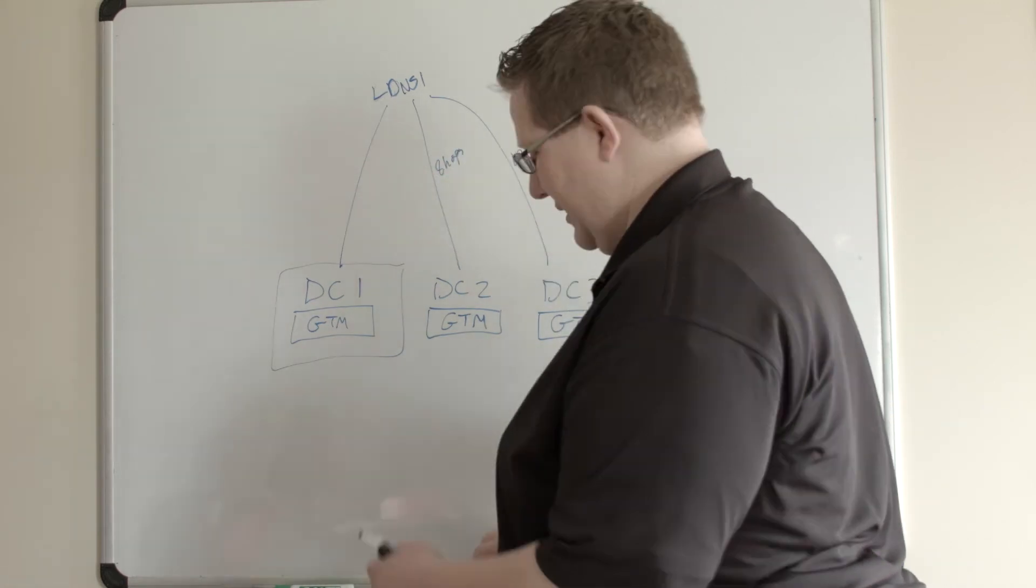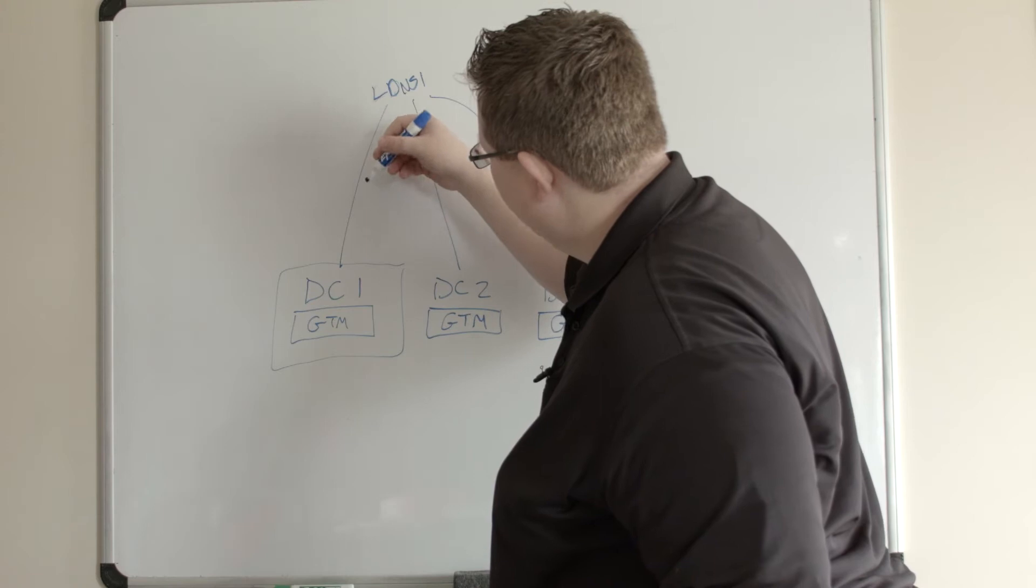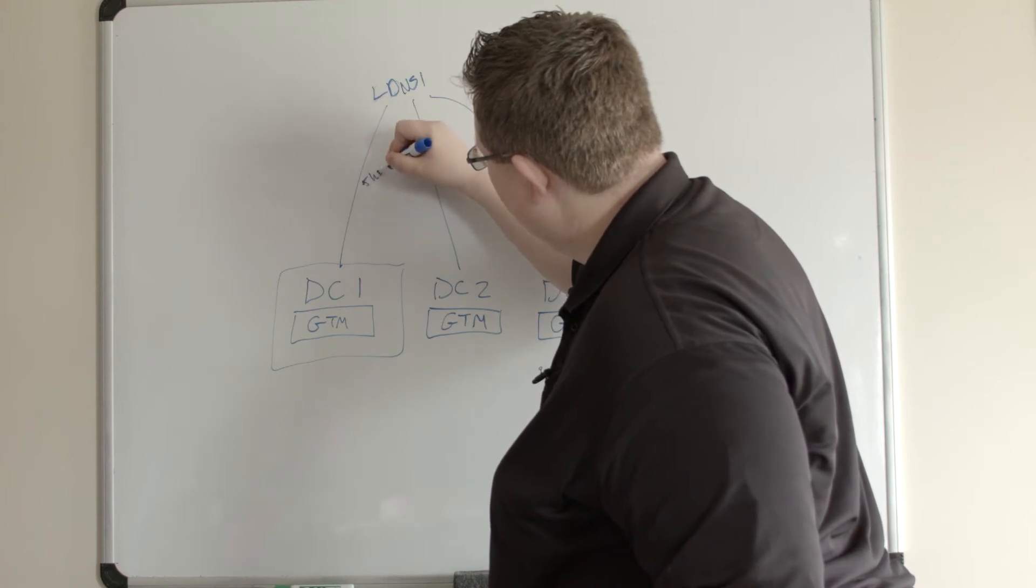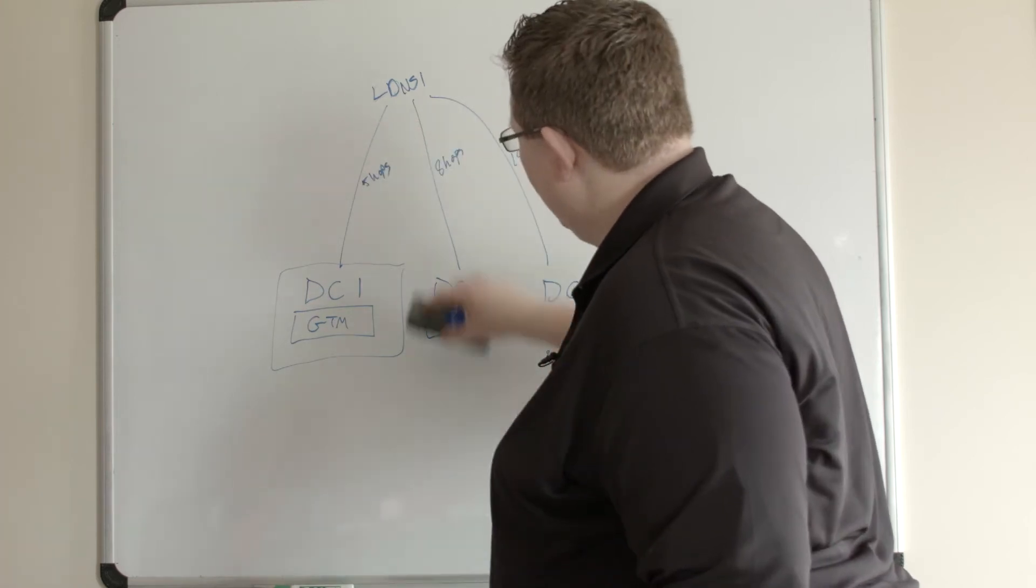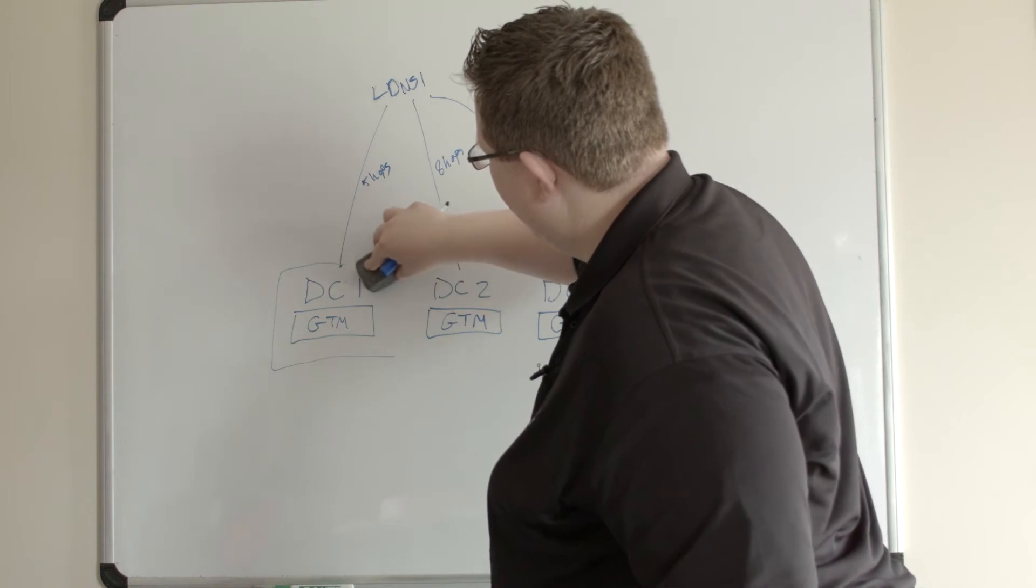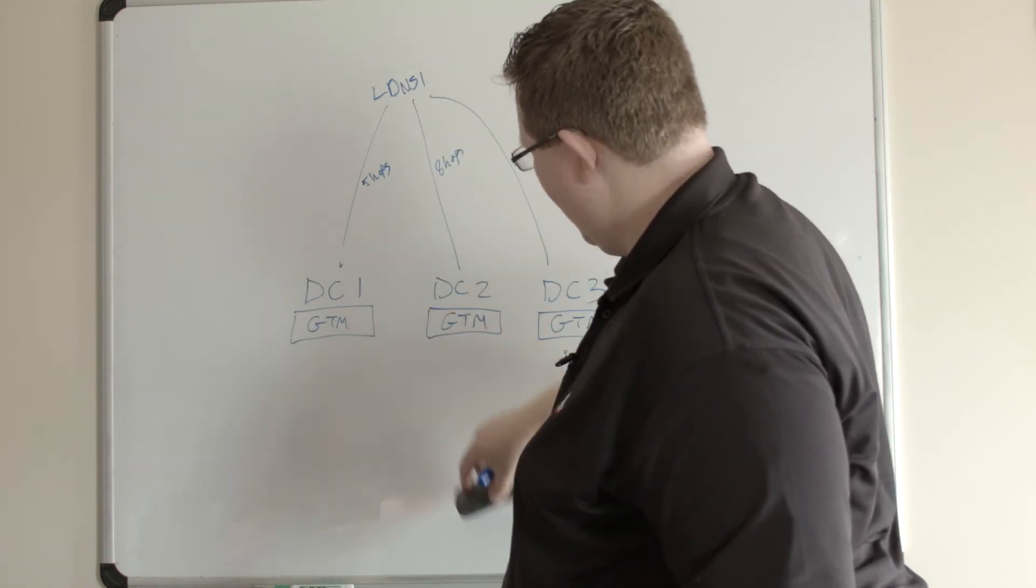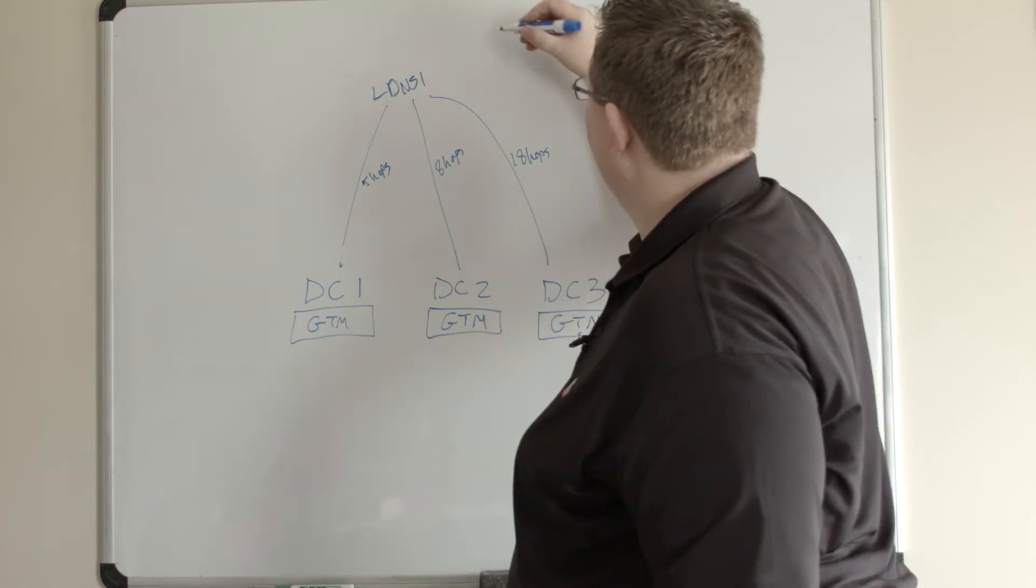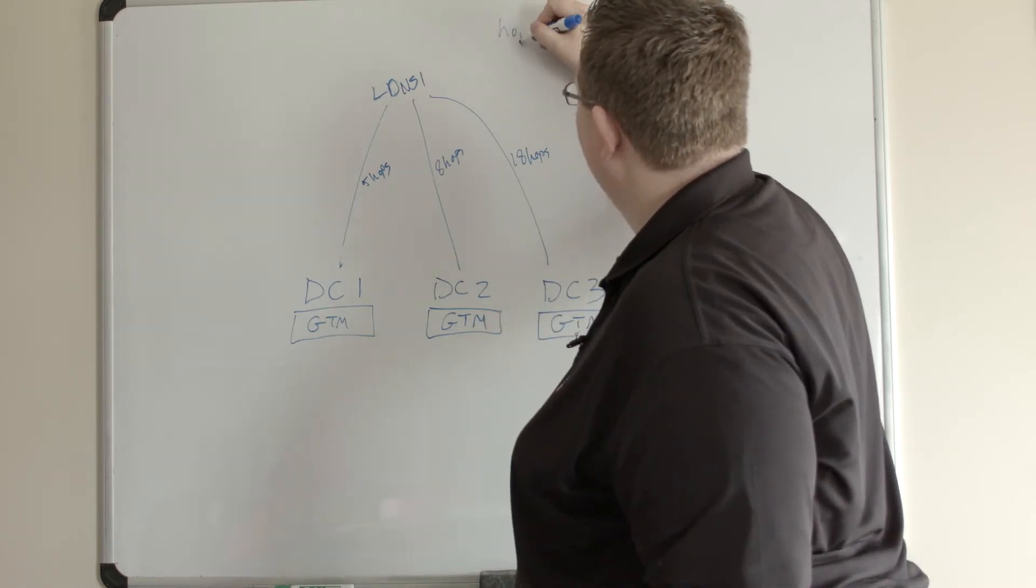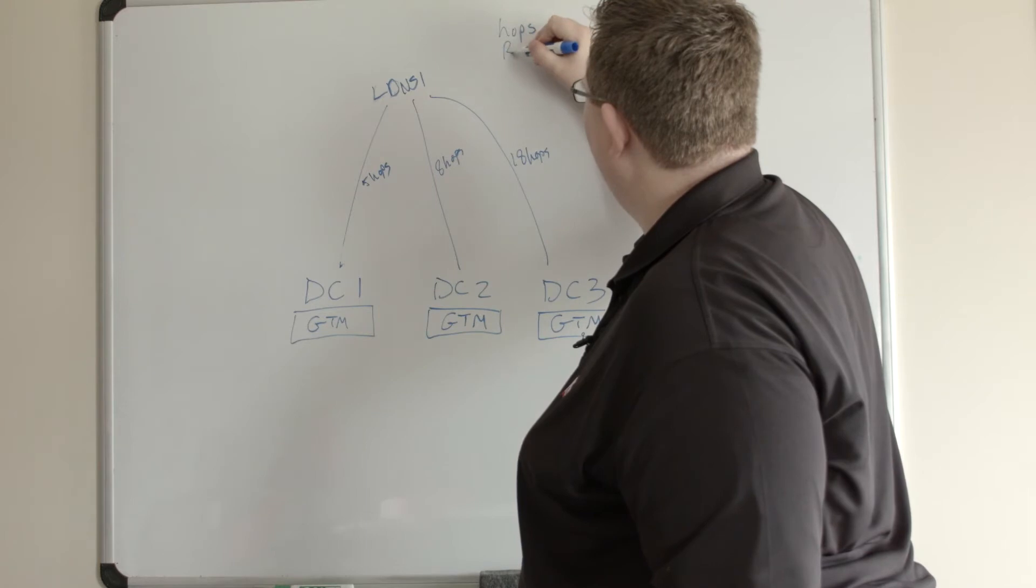Let me leave that up there. The next algorithm that is concerned with the LDNS stats is the... we've got the hops, and then we've got round trip time.